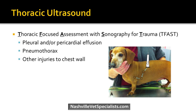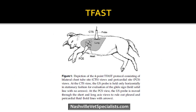For thoracic ultrasound, T-FAST stands for Thoracic Focused Assessment with Sonography for Trauma, and it can help detect pleural or pericardial effusion, pneumothorax, and chest wall injuries. There are four standard sites to evaluate: the chest tube site (CTS) up high on both sides, and the pericardial site down near the heart on both sides. Newer papers describe a fifth site from the diaphragm looking up towards the heart, which provides a lot of useful information.